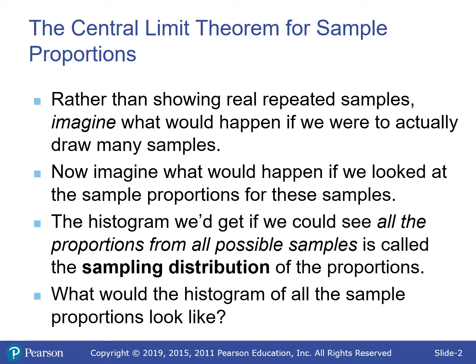So we imagine what would happen if we actually did it. If we looked at the sample proportion or sample mean — say, the mean height — we take a sample of 10 students, get their average height, take another sample of 10, get their average height, and repeat for many, many samples. The histogram of all possible sample proportions is called the sampling distribution of the proportions.